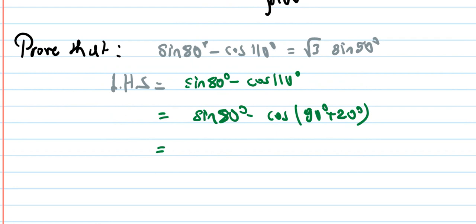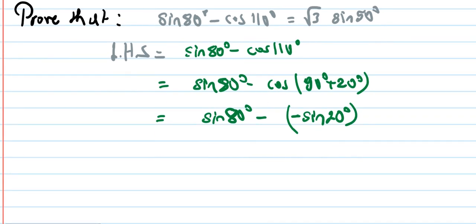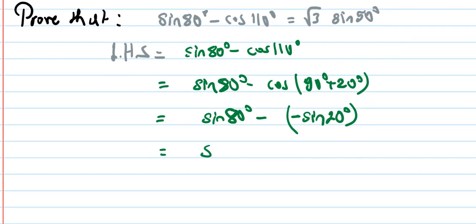Using the identity cos(90° + θ) = −sinθ (second quadrant, ratio changes from cos to sin with negative sign), cos(90° + 20°) = −sin20°. So LHS becomes sin80° − (−sin20°) = sin80° + sin20°.